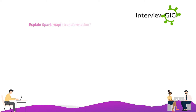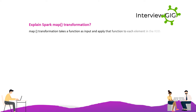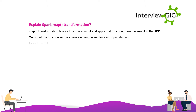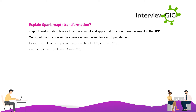Explain Spark map transformation. Map transformation takes a function as input and applies that function to each element in the RDD. The output of the function will be a new element value for each input element. Example: val rdd1 = sc.parallelize(List(10, 20, 30, 40)); val rdd2 = rdd1.map(x => x * x).